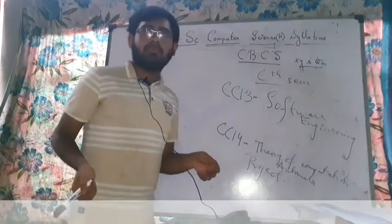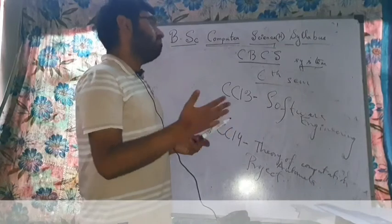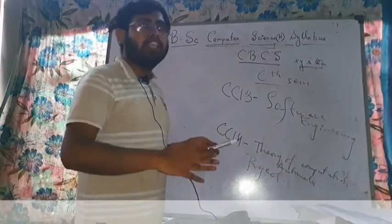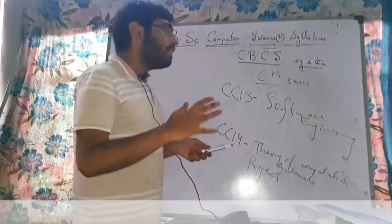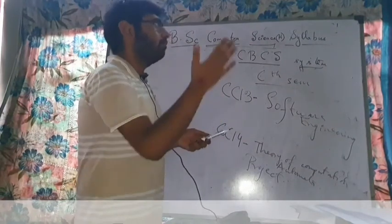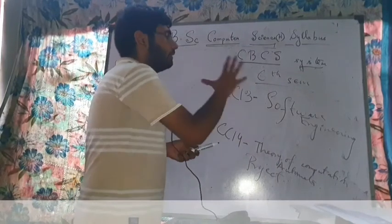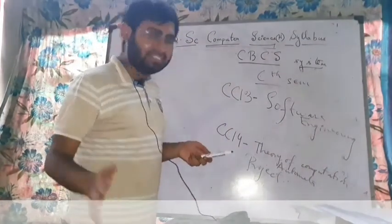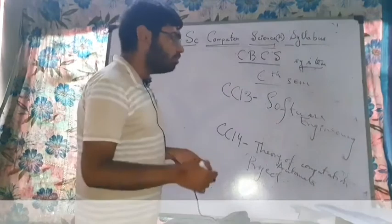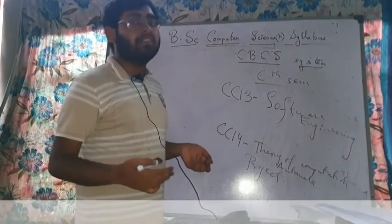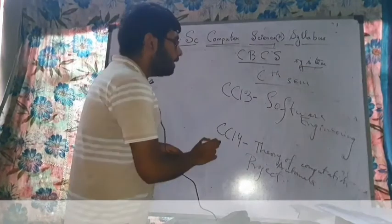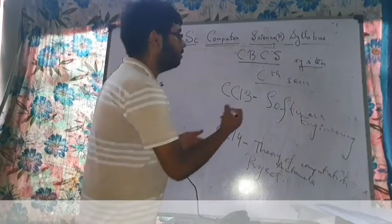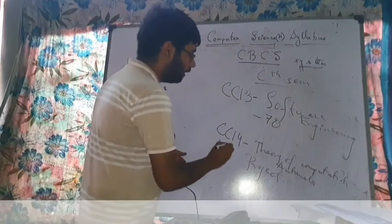For our sixth semester project, our group built a college website — including application, registration, and payment pages — using HTML, CSS, Bootstrap, and JavaScript. You will discuss your project with your teachers when you reach sixth semester. CC13 is worth 70 marks and CC14 is worth 130 marks.